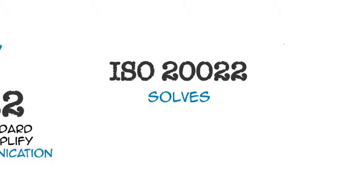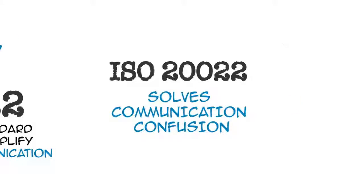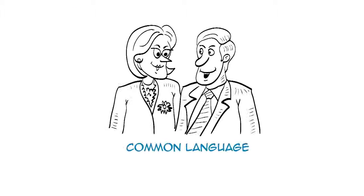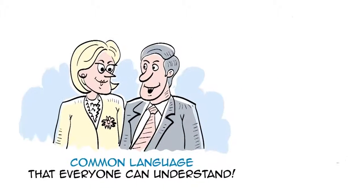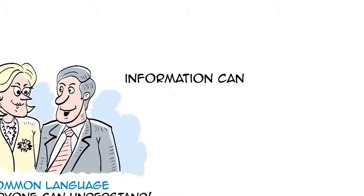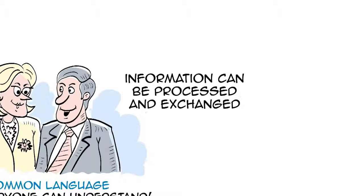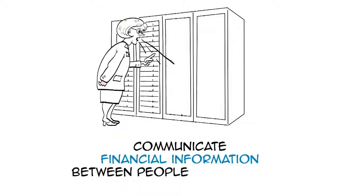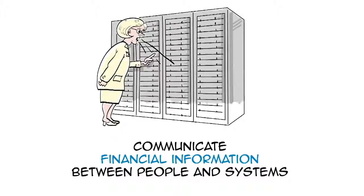You see, ISO 20022 solves communication confusion. How? Well, it offers a global dictionary of common language that everyone can understand, so information can be processed and exchanged worldwide clearly and consistently, making it easier than ever to communicate financial information between people and systems.